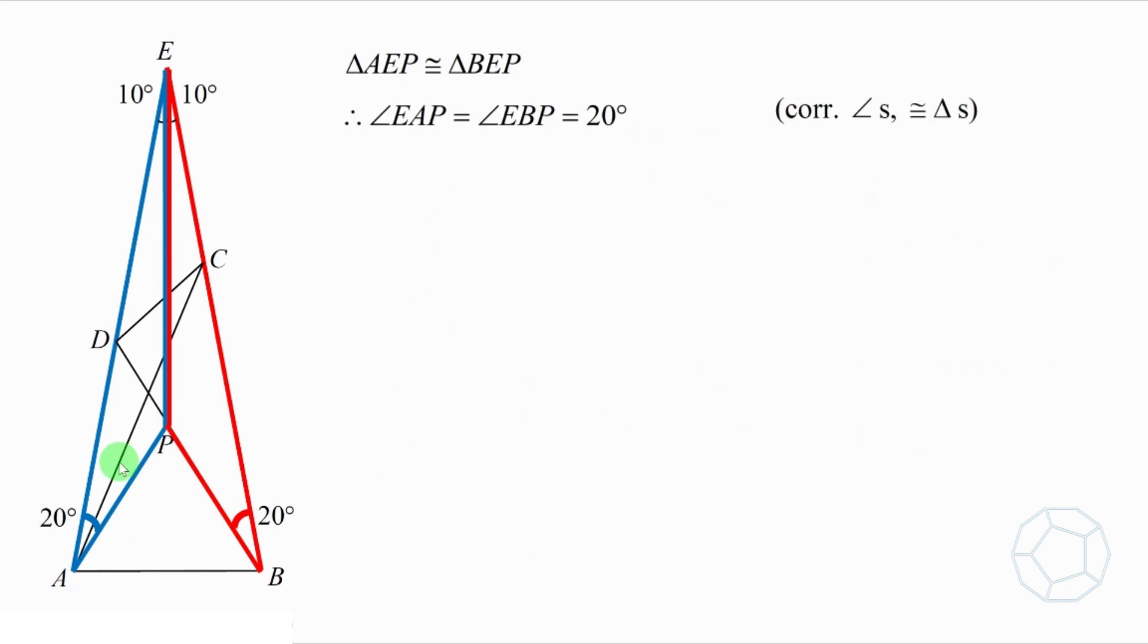So we'll have two corresponding angles of congruent triangles. Angle EAP and angle EBP both are 20 degrees. Recall the given condition, angle CAD is 10 degrees. Therefore, angle CAP, this smaller one, is 20 degrees minus 10 degrees, which is 10 degrees.